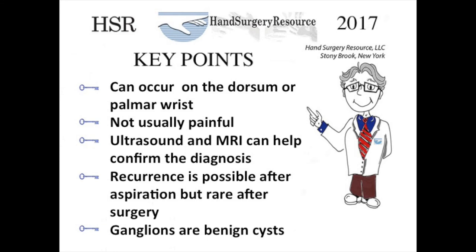Let us review the key points. Ganglion cysts of the wrist can occur on the top or bottom of the wrist. Ganglions are not usually painful, especially when they are large enough to see and palpate. Ultrasound or MRI can confirm the clinical diagnosis. Recurrence after aspiration is common, but rare after surgery. Ganglions are benign cysts.